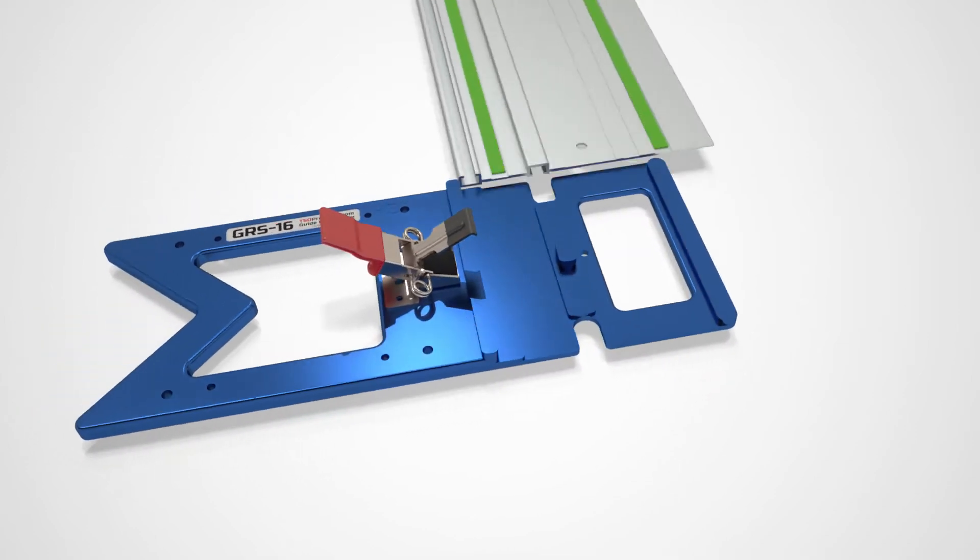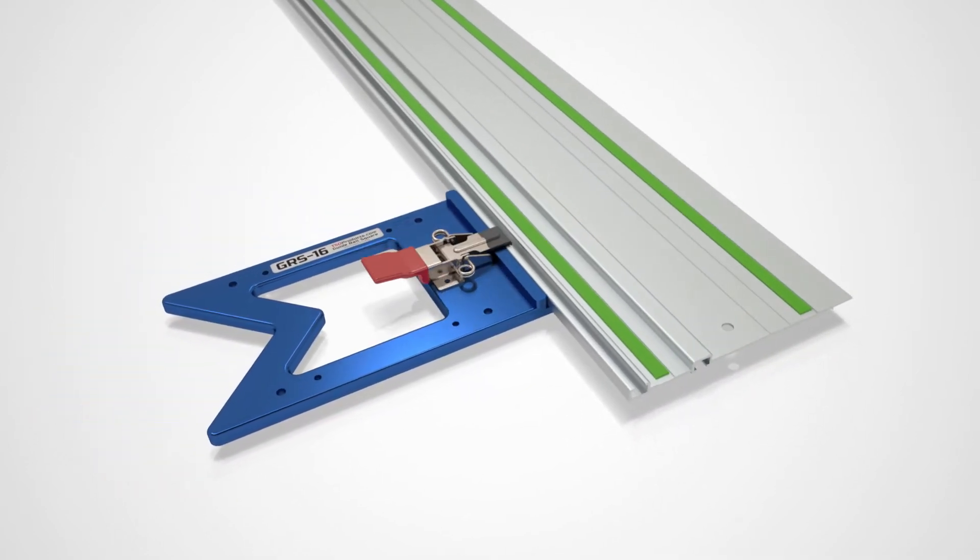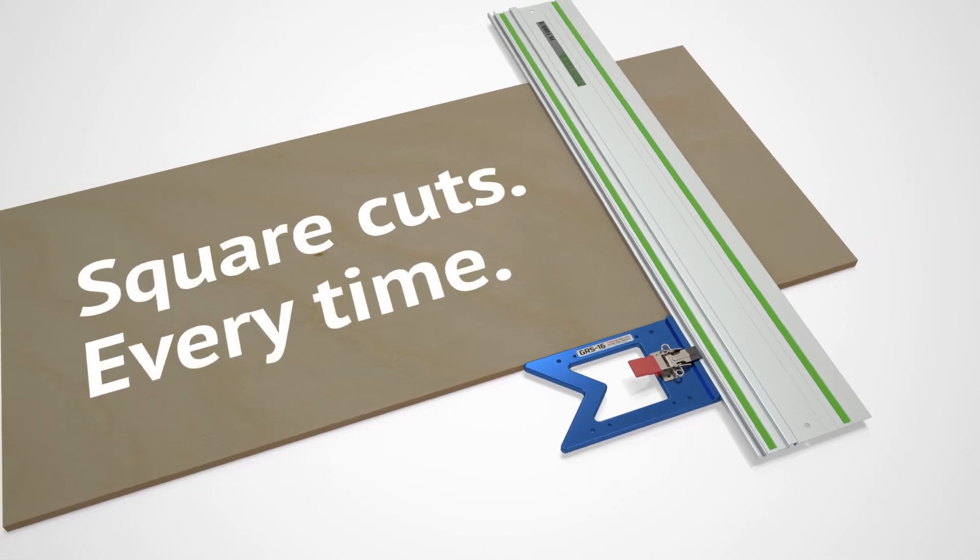In just seconds, transform your guide rail into a high-precision square capable of giving you dead square cuts every time.